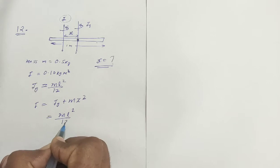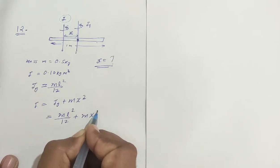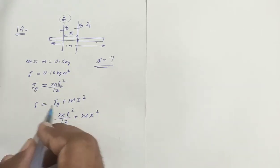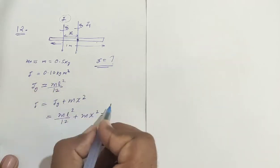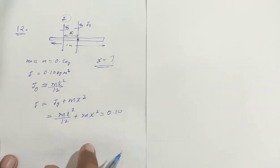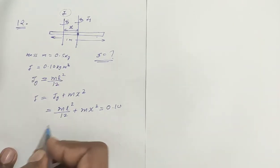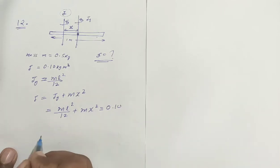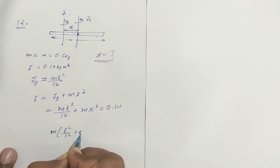I value is equal to 0.10, right? Okay, what do I do? I multiply by 12, and take mass common. So when we take mass common, we get M times (L square by 12 plus x square) is equal to 0.10.